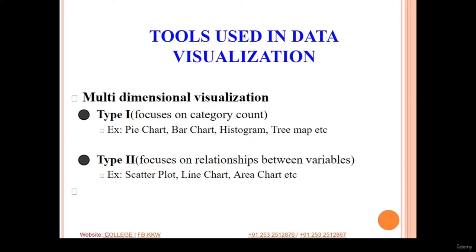Type two is where we are not actually interested in any count of a particular feature, but we are interested in the relationship between different variables. Our dataset may have different attributes, and if we want to properly understand which of these variables are related, strongly correlated, or have causal relationships, then it is related to type two category of multidimensional visualization. Charts used in type two include scatter plot, line chart, area chart, etc.